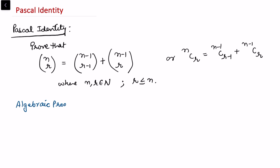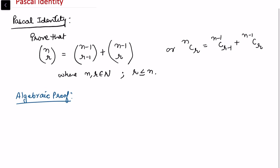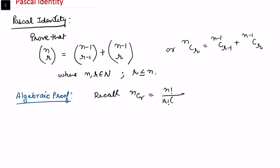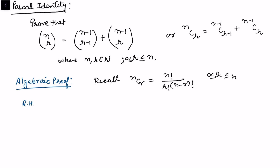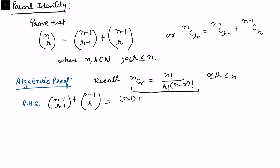First, let's do the algebraic proof. We'll open this expression for ncr. We recall that ncr is the same as n factorial upon r factorial times n minus r factorial, where r lies between zero and n. Starting from the right hand side, we have n minus one choose r minus one plus n minus one choose r. Opening this using the formula, this gives n minus one factorial upon r minus one factorial times n minus r factorial.